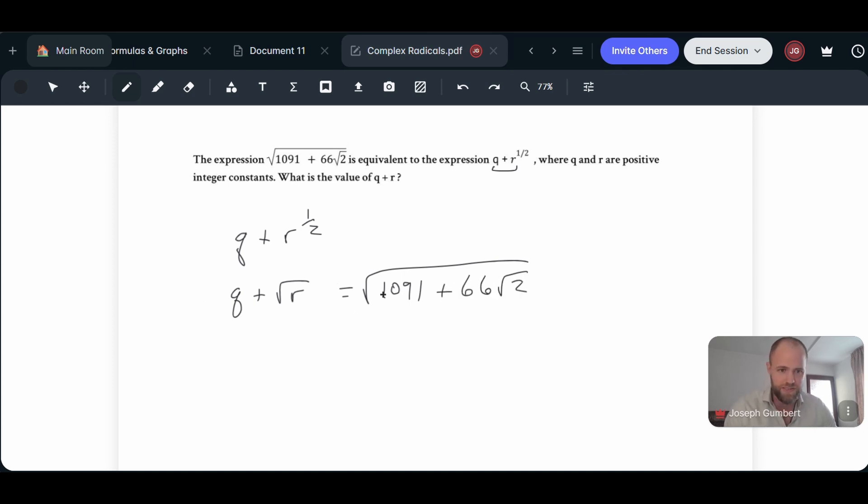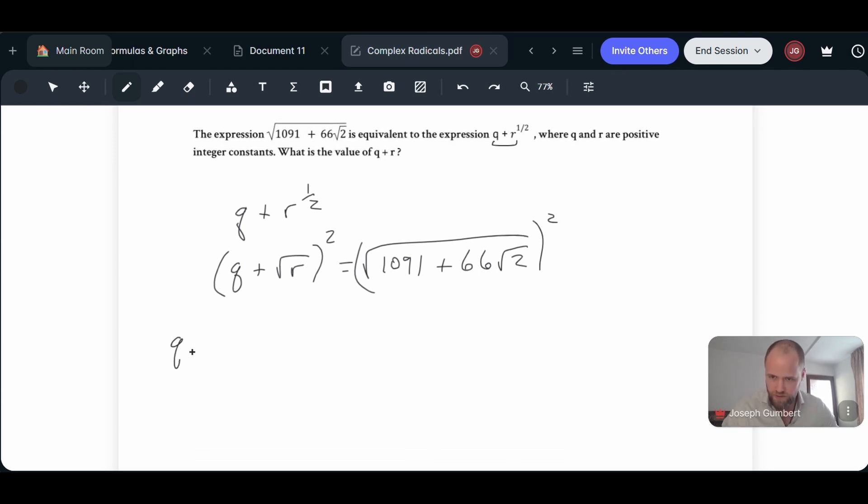And so what I want to do from here is I'm going to try to square both sides and see what happens. So if we square both sides to get rid of this radical here, then we're going to get q plus root r times itself. And then this is going to be q squared plus q root r plus q root r and then plus r. And then from there, that's going to equal just 1091 plus 66 root 2.